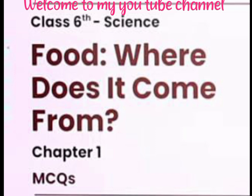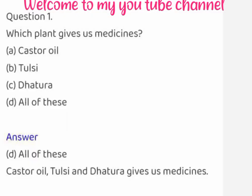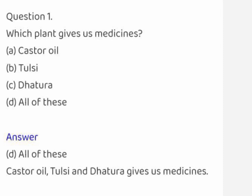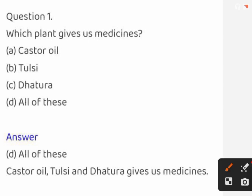First question: which plant gives us medicines? Options are: castor oil, tulsi, datura, all of these. The correct answer is all of these.